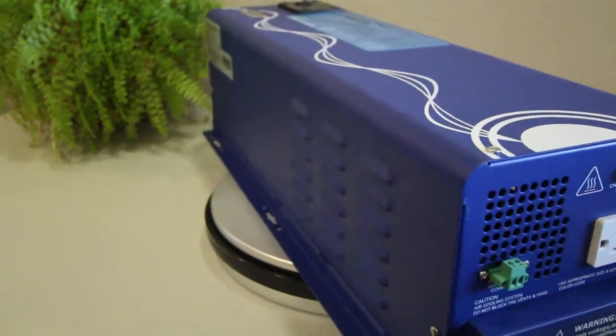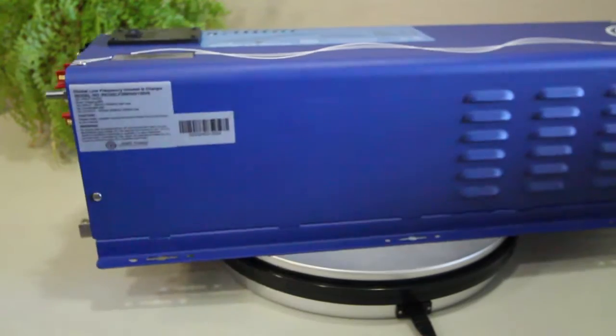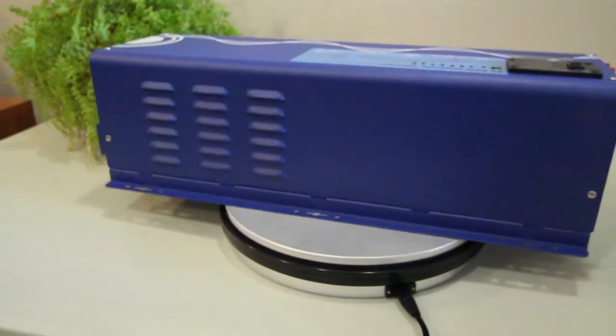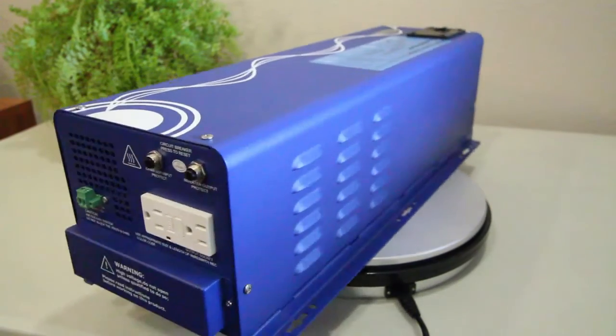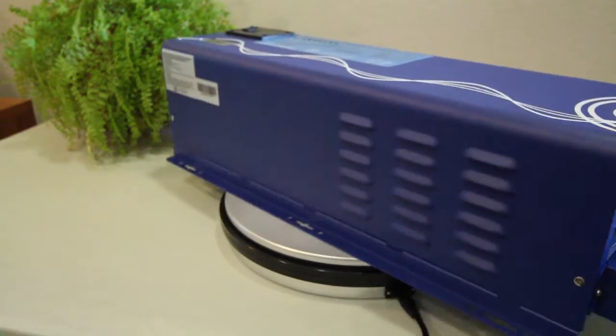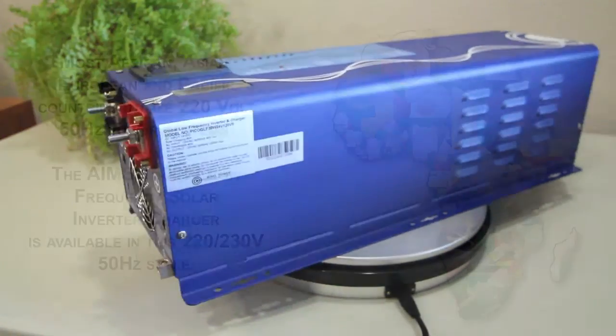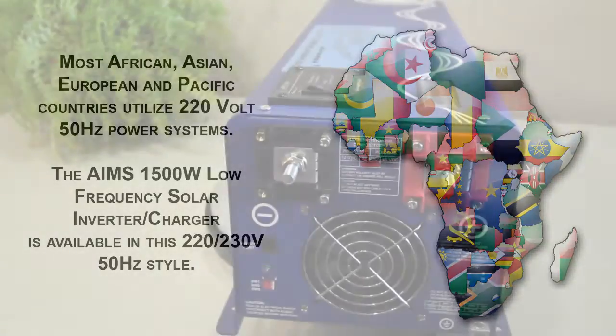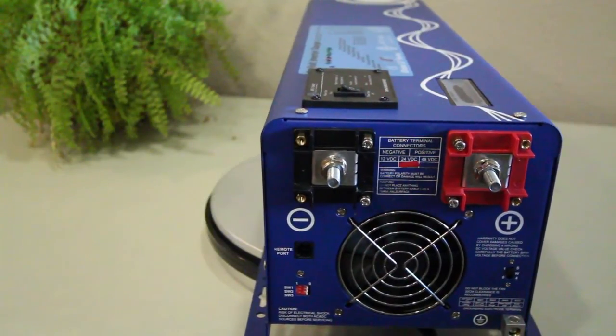You're looking at a 1500 watt low frequency solar inverter charger by Ames Power. It accepts 12 volts of DC, that's direct current electricity, and transforms it into anywhere from 220 to 240 volts of AC, that's alternating current electricity. It provides the AC power in 50 or 60 Hertz.